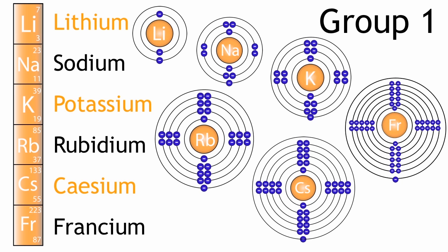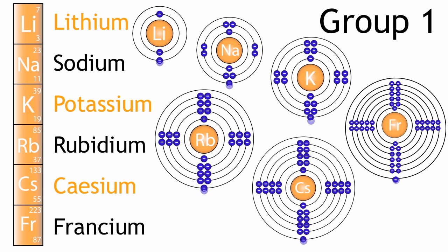If you draw out their electronic structure, the first thing you notice is they all have one electron in their outer shell.